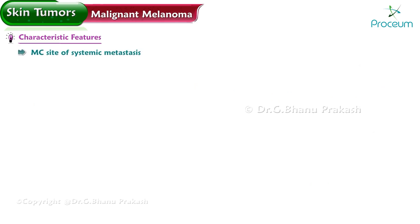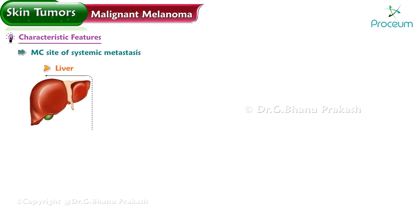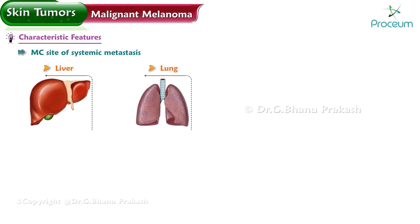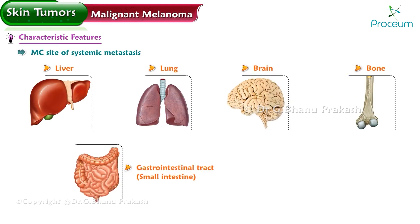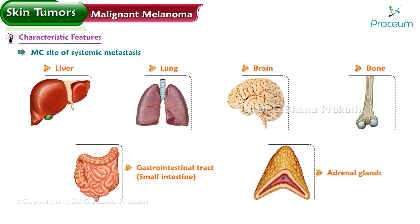The most common site of systemic metastasis is the liver, with other common sites including the lung, brain, bone, gastrointestinal tract (small intestine), and adrenal glands.